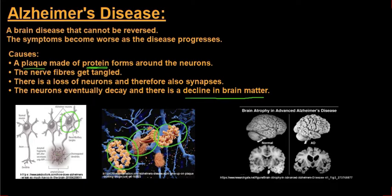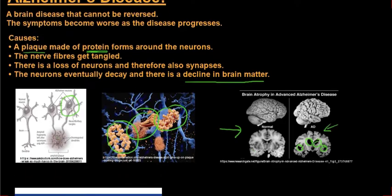Looking at this diagram on the right-hand side, this is a cross-section of the brain of a normal person, and you can see that it looks fairly normal. But if you look at the one just to the right of it, this is a cross-section of somebody with Alzheimer's disease's brain, and you can see there's quite a substantial loss of brain matter because of these neurons dying off.